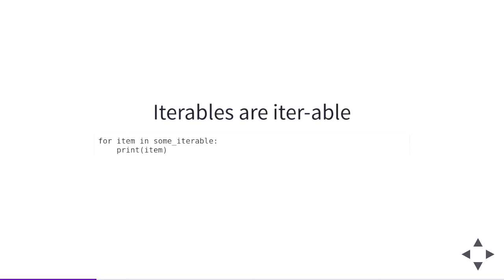If you can loop over something with one of these for loops in Python, it is an iterable. And if something is an iterable, you can loop over it with a for loop. If you're unsure what the word iterable means, that's what it means — anything that you can iterate over is an iterable. Iterables can be looped over, and anything that can be looped over is an iterable.